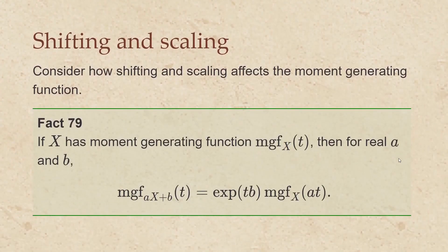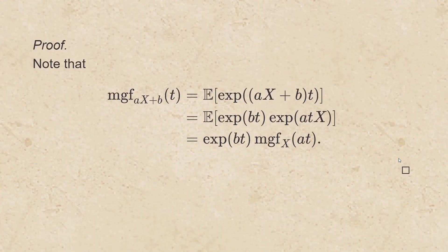Now consider how shifting and scaling affects the moment generating function. If the random variable x has moment generating function mgf sub x at t, then for real values a and b, the moment generating function of a times x plus b at t will be the exponential function applied to bt times the moment generating function of x at at. The way this works is to find the mean of the exponential of the quantity (ax + b) times t. Distributing the t gives us our e to the bt term, and then we have the exponential function applied at atx, which in expectation is just the moment generating function of x evaluated at a times t.